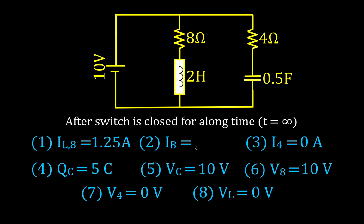We have one more thing — the current through the battery. Since there's no more current flowing through the capacitor branch, all current flows through the inductor branch. The current through the battery equals voltage divided by resistance, which is the same as the 8-ohm resistor: 1.25 amperes. That's all the values for after the switch has been closed for a very long time.